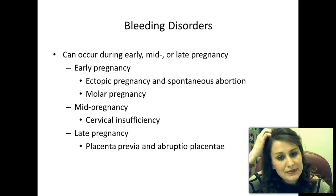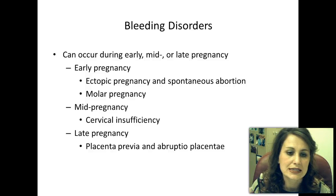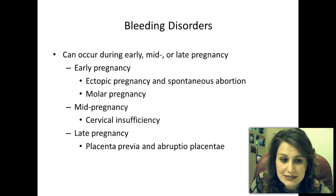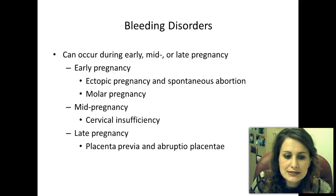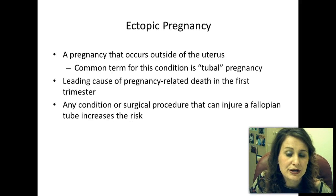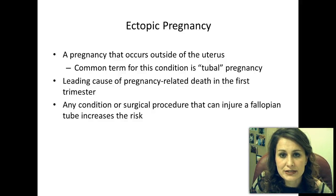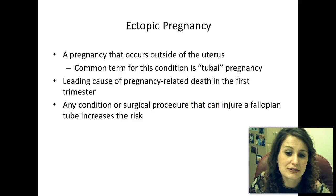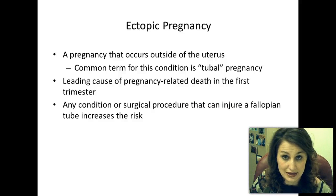Bleeding disorders can happen anytime during pregnancy—early, mid, or late. In early pregnancy, ectopic pregnancy and spontaneous abortion are the usual culprits, or it could be a molar pregnancy. Mid-pregnancy it is usually cervical insufficiency, and late pregnancy can be placenta previa or placenta abruptio. Ectopic pregnancy—a pregnancy that occurs outside the uterus—is commonly referred to as tubal pregnancy because it takes place in the fallopian tube. This is the leading cause of pregnancy-related death in the first trimester. Any condition or surgical procedure that can injure a fallopian tube, such as pelvic inflammatory disease or scar tissue, puts the patient at risk; the zygote cannot reach the uterus and implants outside it.